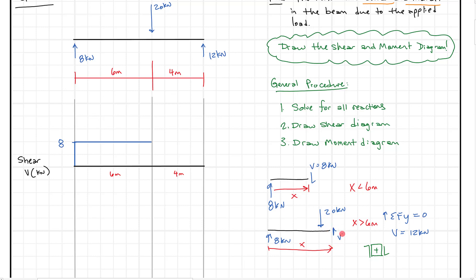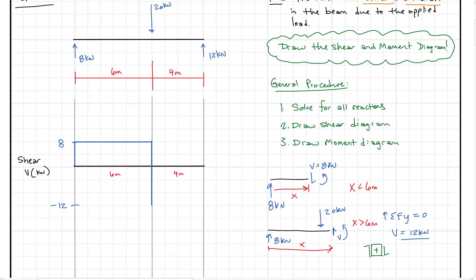The other way to think about it is: when the 20 kilonewton force suddenly comes down, it brings the shear down to minus 12 kilonewtons. This corresponds with our calculated value of 12 kilonewtons and confirms the negative sign convention at this location. Between the 6-meter point and the right support, there's no change in force, so we draw another horizontal line — shear stays at minus 12 kilonewtons.